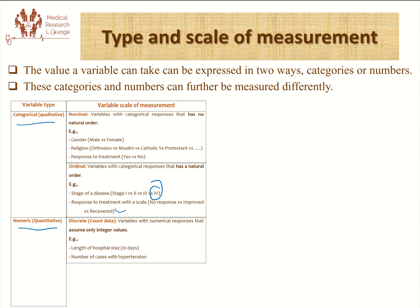For the numerical variable — that is, a variable which is measured using numbers — there are also two types of scale of measurement. The first is when these numbers can assume only integer values; we call it discrete or count data. For example, length of hospital stay: we count it as one, two, three, four in integer values, whole numbers. And for the number of cases of hypertension or some disease condition, we measure it in whole numbers, integers. We can't say we have one and a half hypertensive patients — rather, we just count them as one, two, three, four.